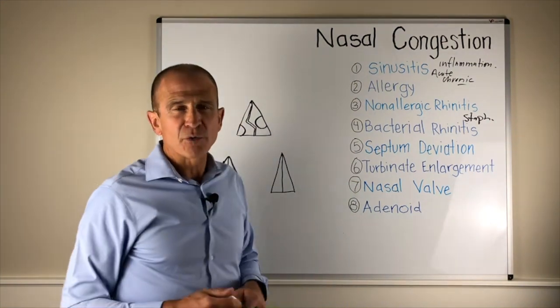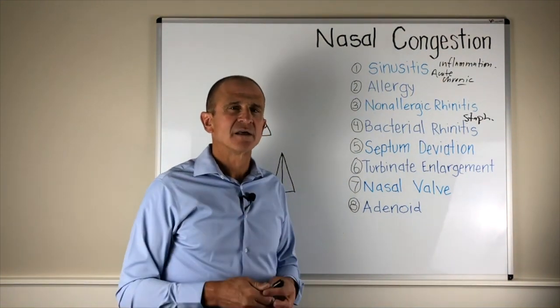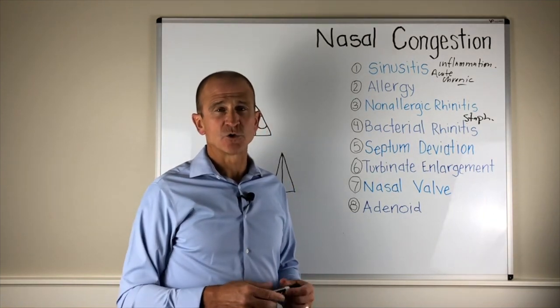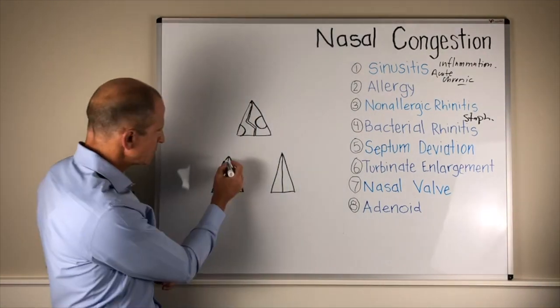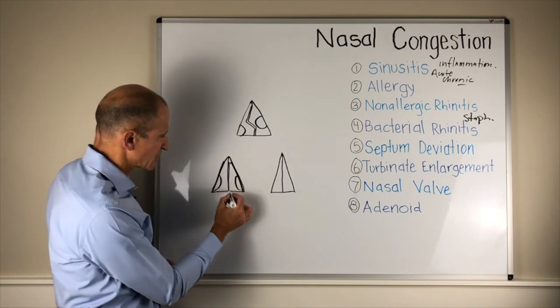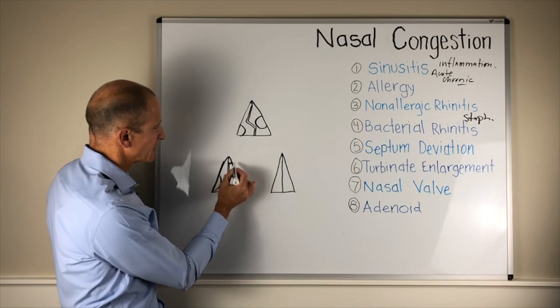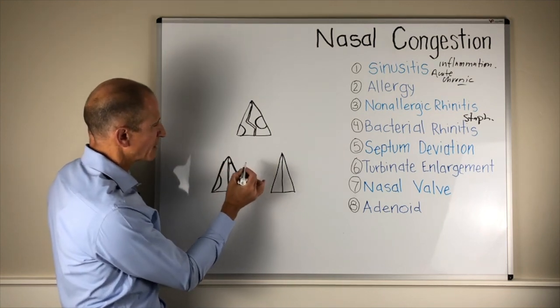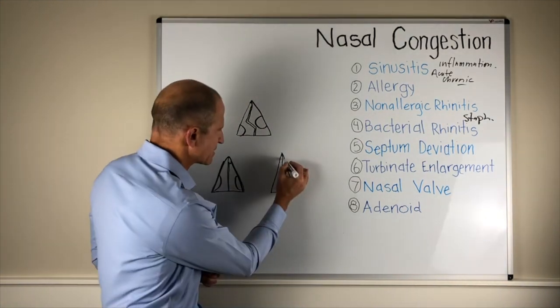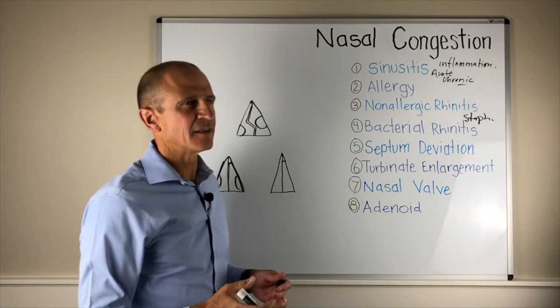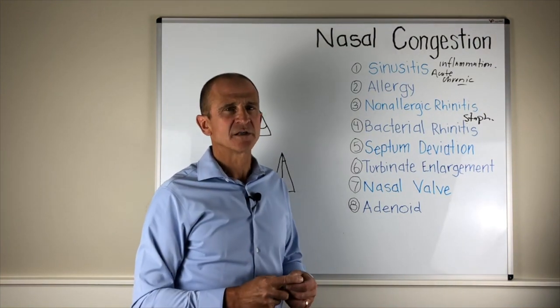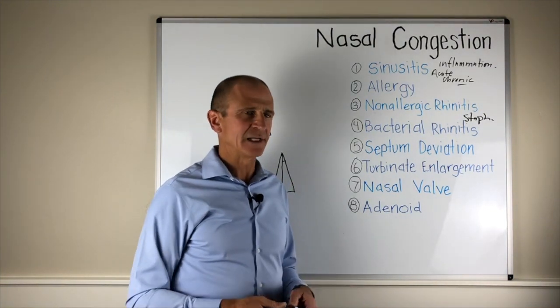The nasal valve problem. Some individuals have weak walls of the nose that cause the valve area of the nose to constrict. This area of constriction, we call this area the valve. If this were the wall of the nose, and if this were a straight septum, the measurement of this valve, there's a critical measurement that one must meet to have adequate patency through the nasal cavity. If someone has a smaller nasal valve, then that will restrict the flow of air through that critical part of the nose for adequate nasal breathing.